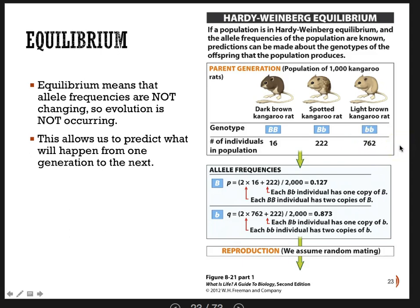You might ask why there are so many homozygous recessives. Shouldn't it be the other way around? Absolutely not. Evolution doesn't just say that the big-B allele will become more common — it has to do with which individuals are surviving to reproduce in their environment. In this particular environment, the light brown kangaroo rats were the ones doing better. But let's say, for argument's sake, that evolution isn't happening right now. So how can we figure out p and q?